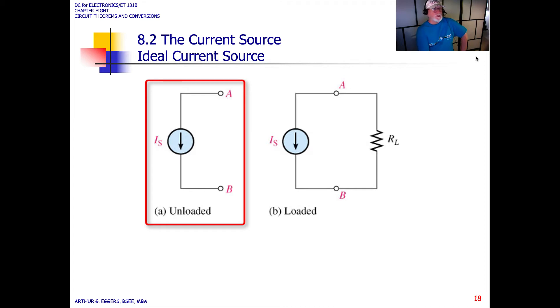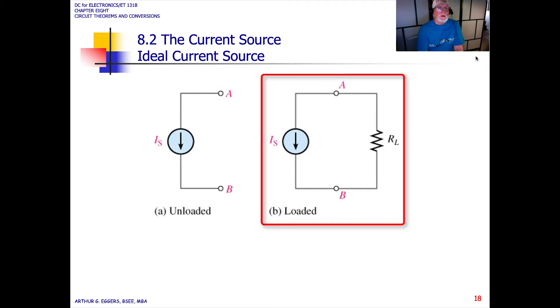Just like the voltage source, you can see here that we have a loaded and an unloaded condition. So in an ideal source, it doesn't show any internal resistance. Our source typically for a current source is this circle and arrow representation telling us it's a current source and that it is flowing in one direction or the other.